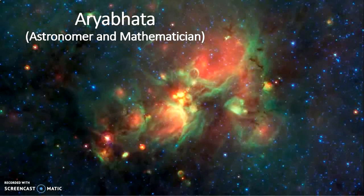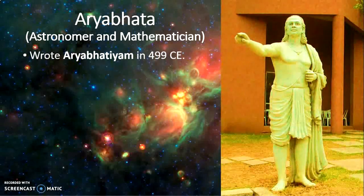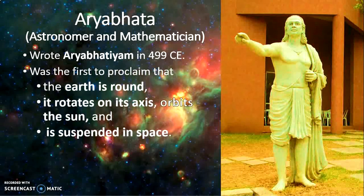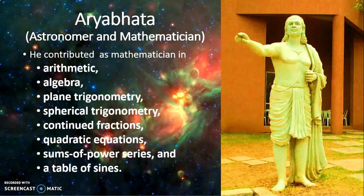You must have heard about Aryabhata, a famous astronomer and mathematician of ancient times. He wrote Aryabhatiyam in 499 CE. He was the first to proclaim that the Earth is round, rotates on its axis, orbits the Sun, and is suspended in space — what a great discovery. As a mathematician, he also contributed in arithmetic, algebra, plane trigonometry, spherical trigonometry, continued fractions, quadratic equations, sums of power series, and tables of sines.